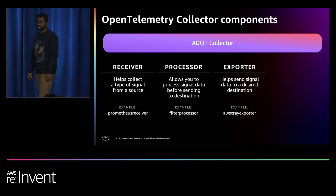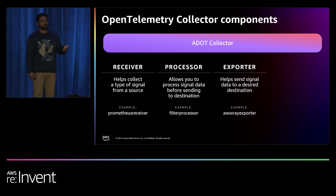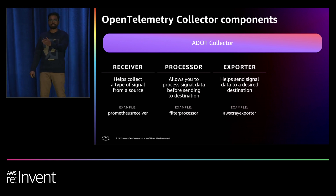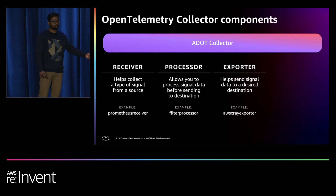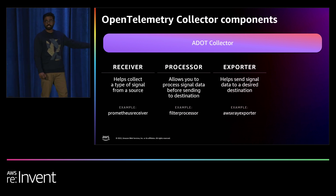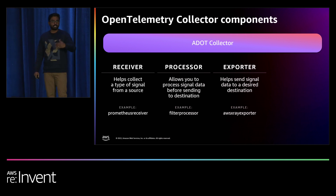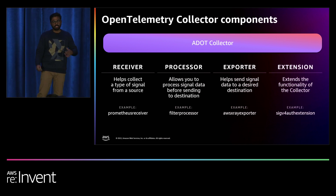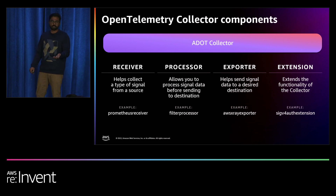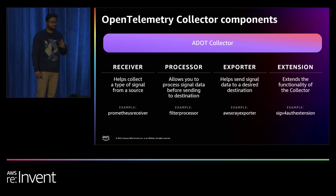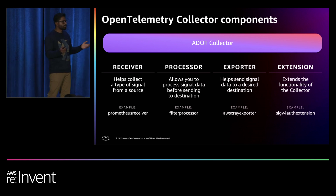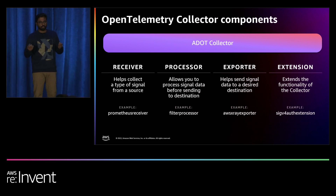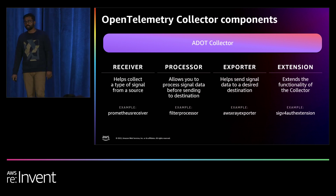With the processor, you could use a batch processor to group signals and minimize the number of API calls to the destination, or a filter processor to filter out certain data, or add additional information to enrich the data for better context and correlation. Then you have the exporter — its responsibility is to send data to a destination. It could be the AWS X-Ray exporter, the Prometheus remote write exporter for long-term storage like Cortex, Thanos, or Managed Prometheus, or the AWS EMF exporter for CloudWatch. Then you have extensions, which expand the features of the collector.